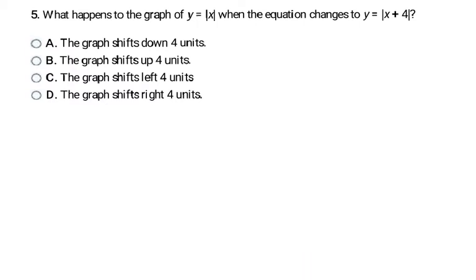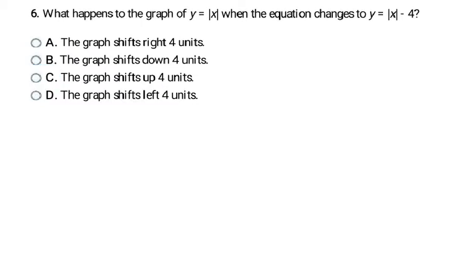Now we're looking at absolute value graphs — the V-graphs. The first question asks: what happens to the graph of y equals absolute value of x when the equation changes to y equals absolute value of x plus 4? I'm adding 4 inside the absolute value symbols. Remember, inside means a left or right shift, and since it's a plus 4, it shifts to the left. My answer is C — it shifts left 4 units. The next question asks what happens when you add minus 4 outside the absolute value. Outside means up or down; minus means down. The graph shifts down 4 units, so the answer is B.